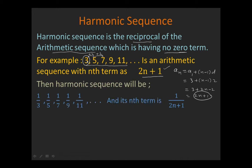Now the harmonic sequence will have all terms in reciprocal form. So 3 becomes 1 over 3, 5 becomes 1 over 5, 7 becomes 1 over 7, and 9 becomes 1 over 9. The general term of this harmonic sequence will be 1 over (2n plus 1), since the general term of the arithmetic sequence is 2n plus 1 written in reciprocal form.